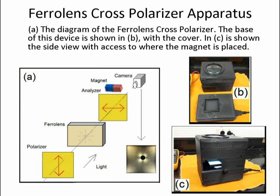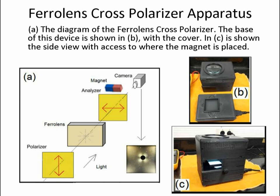In this slide, we have the ferrolens cross polarizer apparatus. This apparatus is designed for education — you can imagine it in high school or first-year physics in college. We have two polarizing films with the ferrolens in the center containing ferrofluid. Figure B shows the top of the device, and figure C shows where you place the magnets for the applied field.